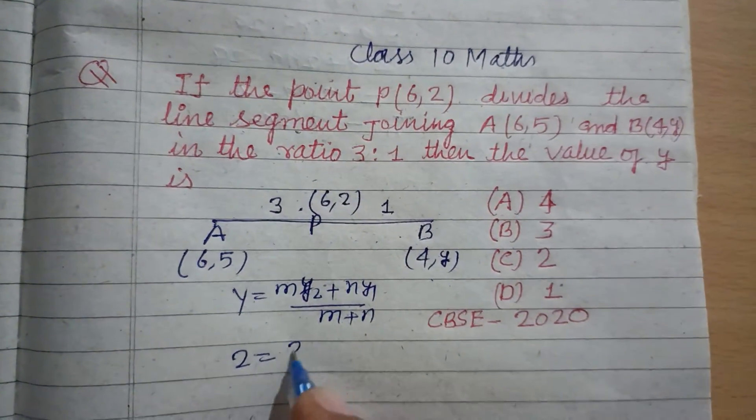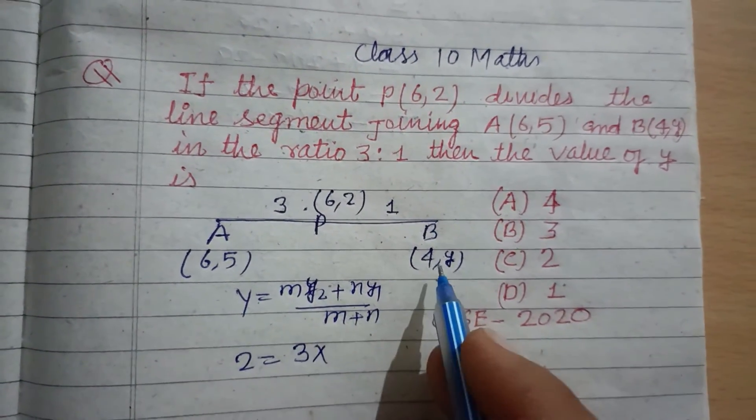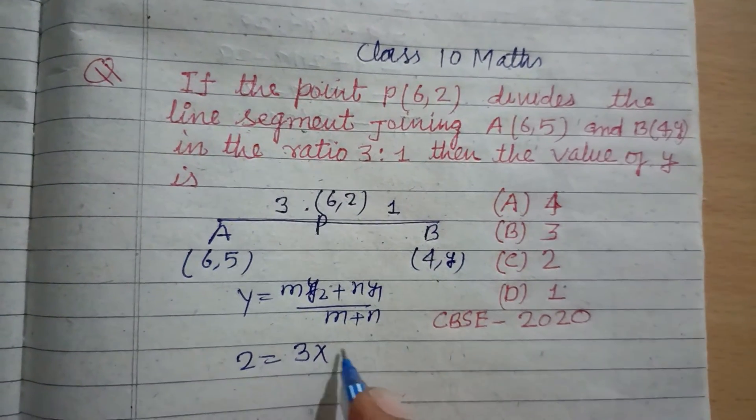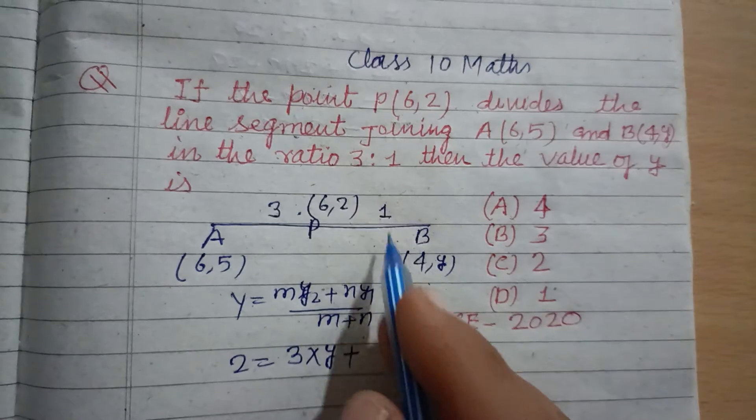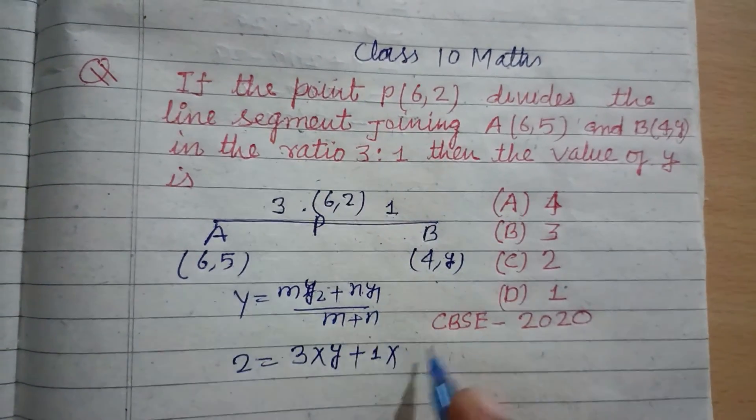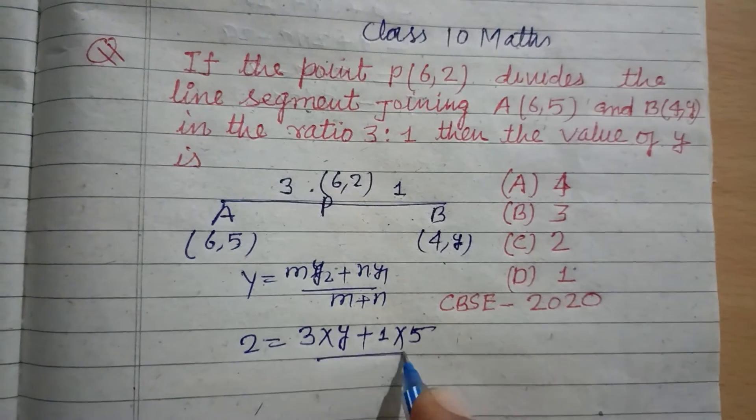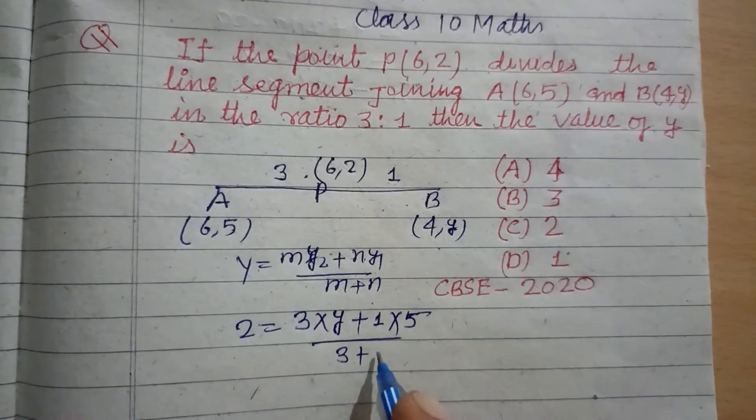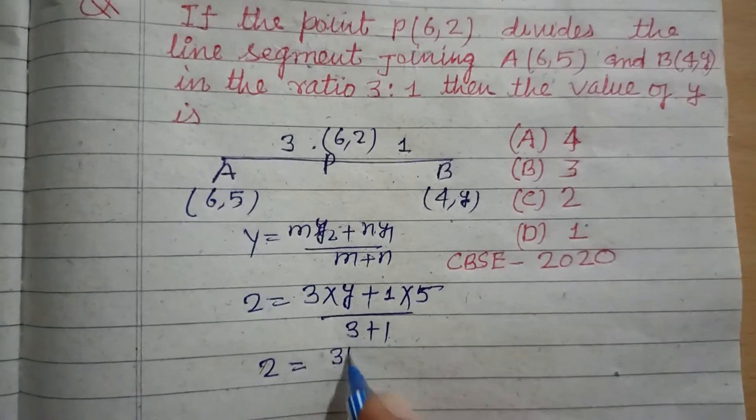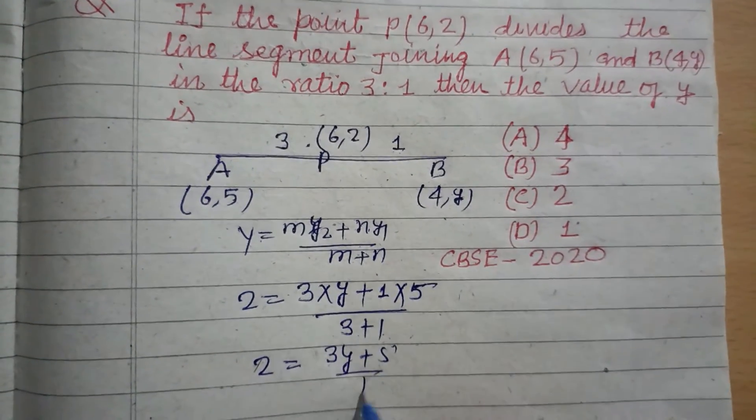M is 3 and y2 is y. N is 1, y1 is 5 upon M plus N which is 3 plus 1. So this is 2 equal to (3y + 5) upon 4.